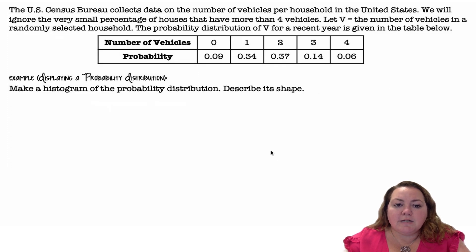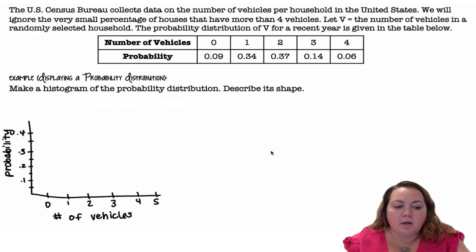The U.S. Census Bureau collects data on the number of vehicles per household in the United States. We will ignore the very small percentage of houses that have more than four vehicles. Let V equal the number of vehicles in a randomly selected household. The probability distribution of V for a recent year is given in the table below. So make a histogram of the probability distribution and describe its shape.